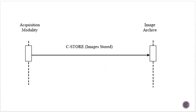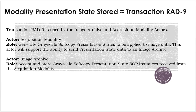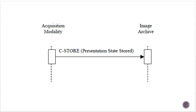Looking at the diagram, any acquisition modality sends the images using cStore to PACS. For modality presentation state stored, transaction RAD-9, the acquisition modality generates grayscale soft copy presentation states to be applied to raw image data and supports the ability to send presentation state data to an image archive. The image archive accepts and stores grayscale soft copy presentation state SOP instances received from the acquisition modality. In other words, once the modality has the raw data, it can process it and send the presentation state, and PACS will store it — again via cStore.